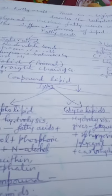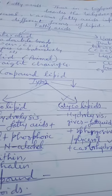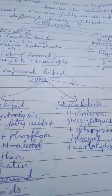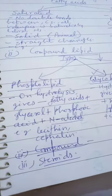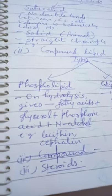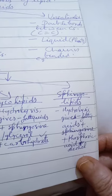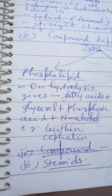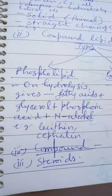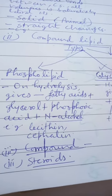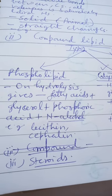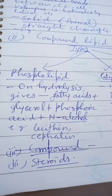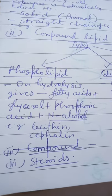The second major category of lipid is compound lipids, which can be categorized into three types: phospholipids, glycolipids, and sphingolipids. Phospholipids on hydrolysis give fatty acid, glycerol, phosphoric acid, and a nitrogen-containing alcohol. The example is lecithin.